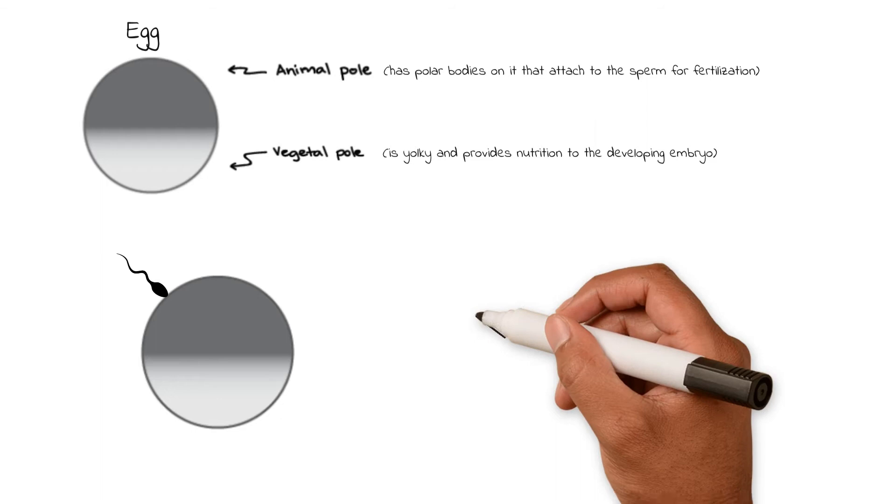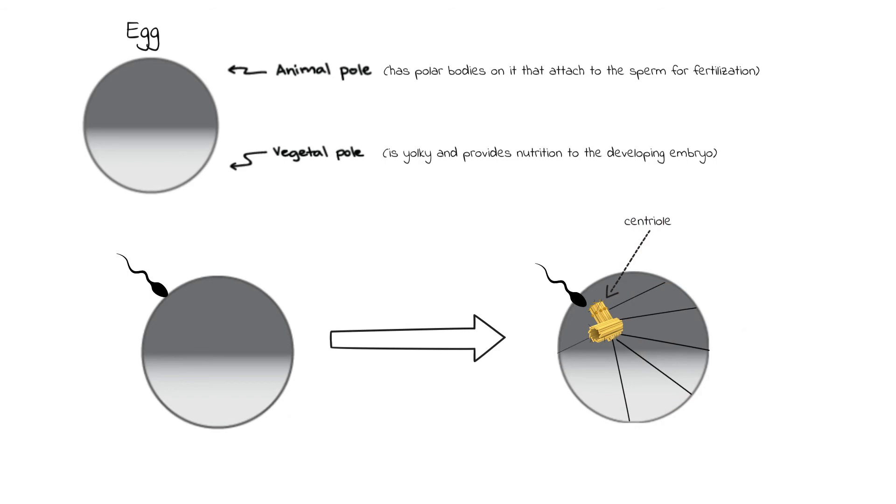When a sperm fertilizes the egg at the cap of the animal pole, it donates a centriole, which creates fibers called microtubules that connect to the cytoplasm along the edges of the egg, called the cortex.